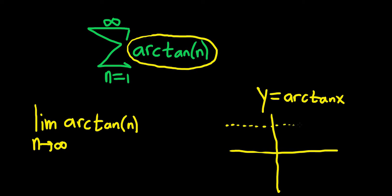So it actually has two horizontal asymptotes. This one is pi over 2, and this one over here is negative pi over 2. And it looks something like this.